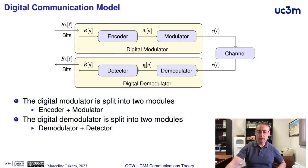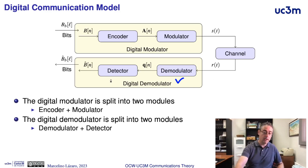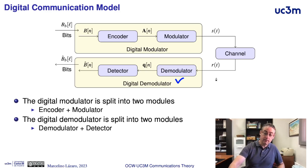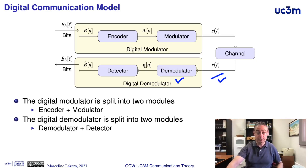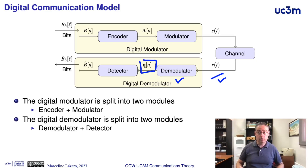A first element in the receiver of a digital communication system is the demodulator. In this video we will analyze this element. The receiver of a digital communication system has two elements: the demodulator and the detector. Here we are going to analyze the demodulator, which is the element that processes the received signal — the signal at the output of the channel — to convert it into a sequence of vectors, the sequence q, containing the vector description of the received signal.